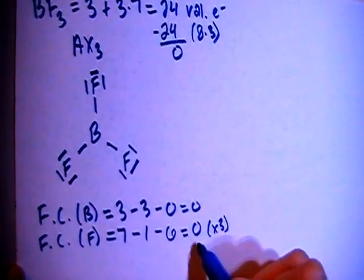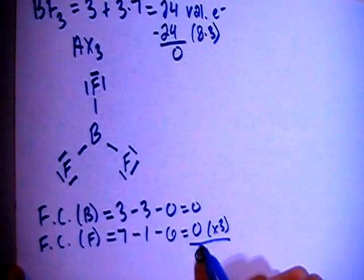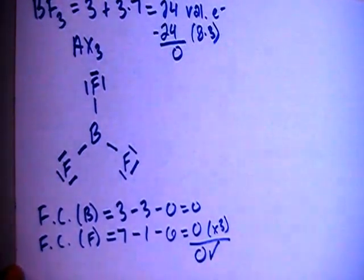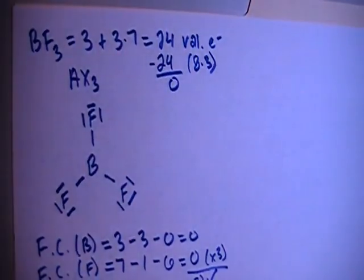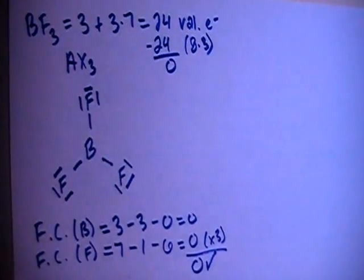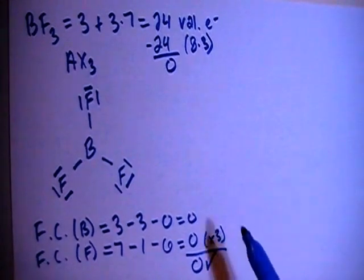Multiply that times 3, because there are 3 of them, still going to be 0, add them all up, it's going to overall have a formal charge of 0, which is what we need because this is a neutrally charged compound. It's not an ion, so the formal charge should be 0.